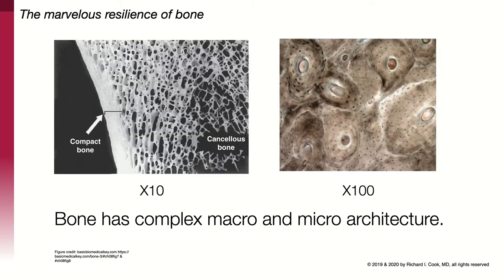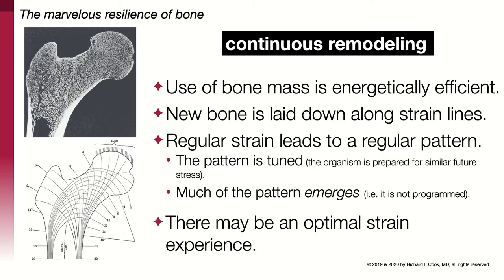Bone has both a complex macro and micro architecture. The macro architecture you've probably seen before: the exterior of the bone — compact bone — is solid and stiff, and there's a woven, spongy material in the middle called cancellous bone. At a microscopic level there's a much more complex architecture relating to where the cells are located and how they're communicating. Bone undergoes continuous remodeling. The use of bone mass is energetically efficient — we don't have a lot of calcium, so we need to put bone exactly where it'll do us the most good, particularly along the lines of strain the bone is trying to resist.